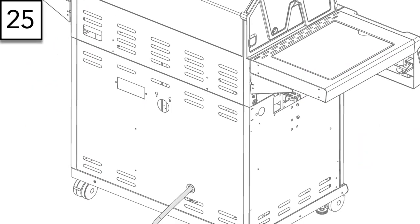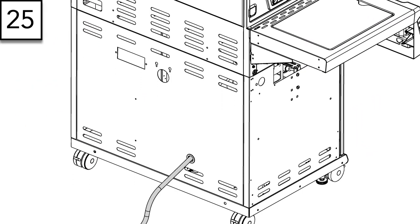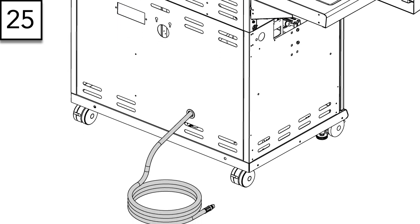Step 25: If you have a natural gas grill, pull the hose through the back left circular opening on the side panel.